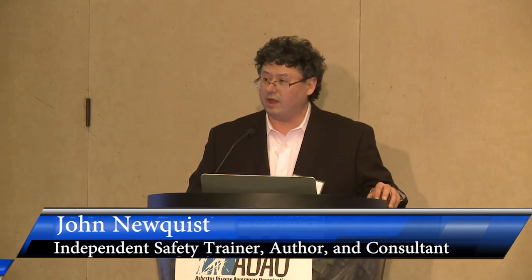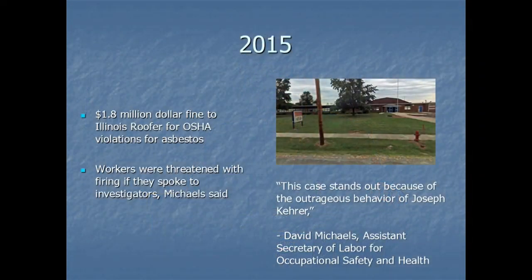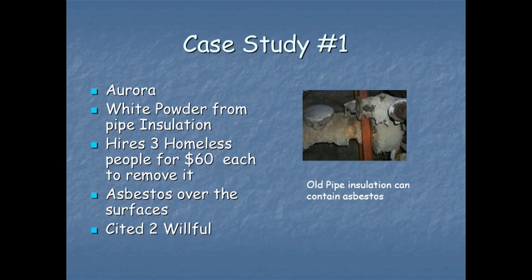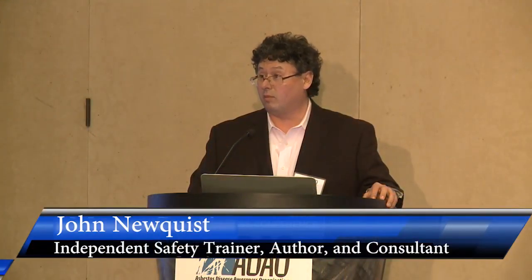Two of the largest fines in the last five years in Illinois have been asbestos cases. The Illinois OSHA people know it well — they've seen the human impact and they go out and look hard. One case: a printing company up in Aurora hired three people from a homeless shelter, paid them $60 each, handed them a mask, and said 'rip out the asbestos and throw it in the dumpster.' I worked that case — he didn't even know the workers' names. They ripped it up, threw it in the dumpster, and got caught. We got two willful citations — should have been more.